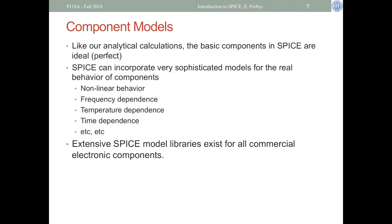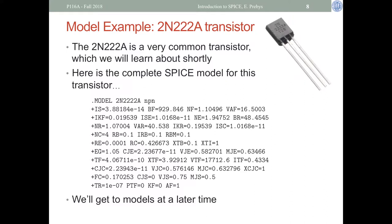Most importantly, all commercial electronics components have SPICE models — if you buy an electronic component, you can download the SPICE model. Here's an example for a basic transistor, the 2N2222A, which we'll use in the lab. You don't need to worry about all the parameters, just notice there are a lot of them. This is what it takes to fully model the transistor's behavior. We're not going to talk about models today; we'll get to simple models a little later in the quarter.